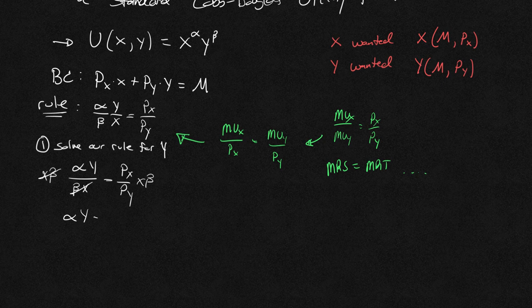So notice this x beta is going to cancel on the left. I'm going to be left with alpha y equals, I'm going to put beta out front, beta px times x over py. And then I'm going to divide this side by alpha, meaning I'm going to multiply this side by 1 over alpha. I'm going to get left with y equals beta over alpha px over py times x. So that's the first step. I solved our rule for y.